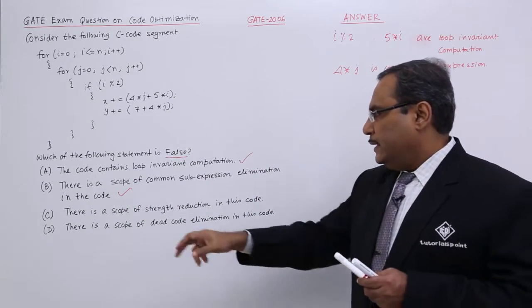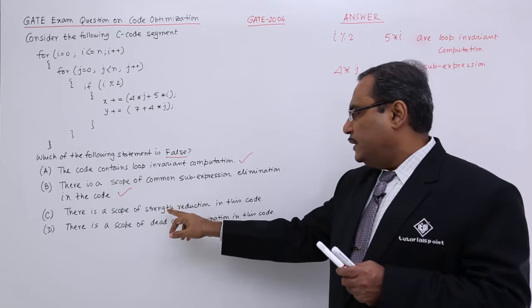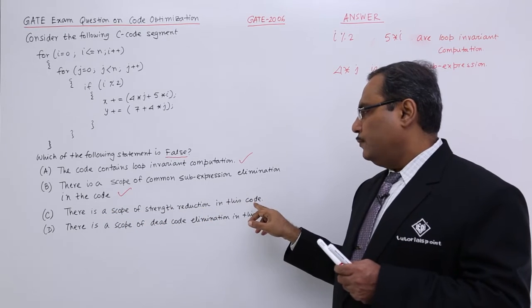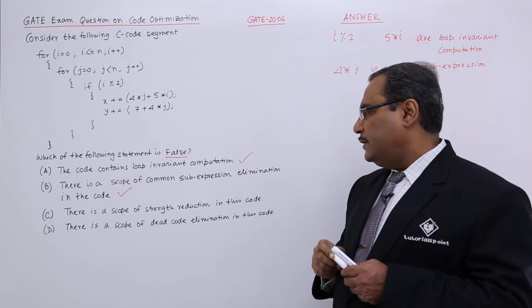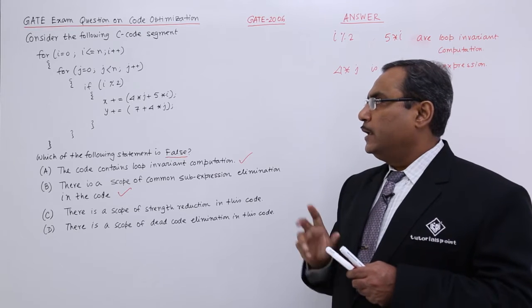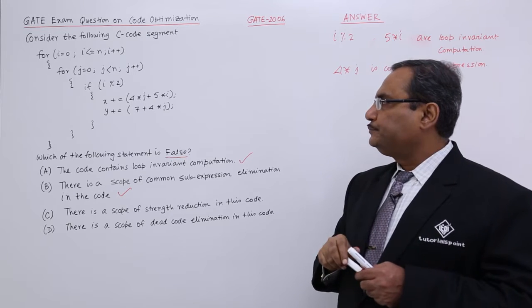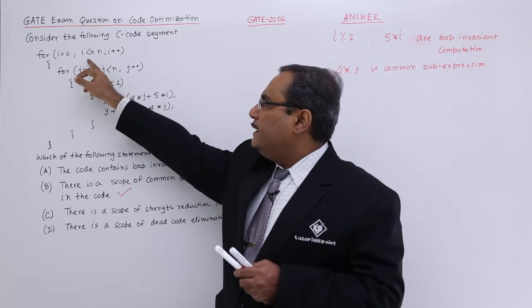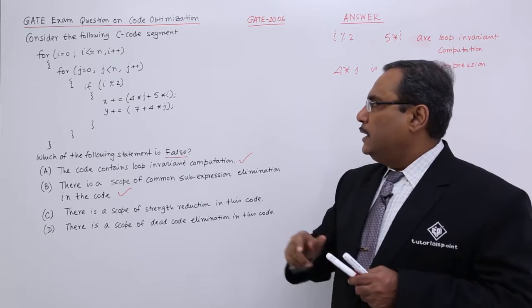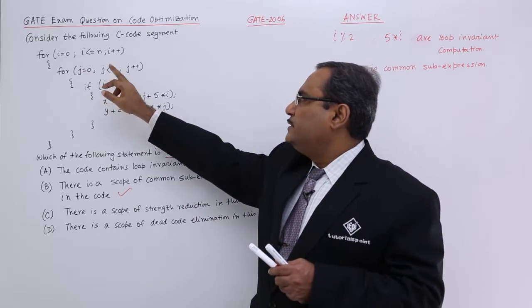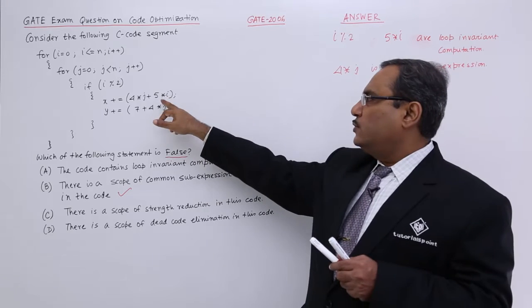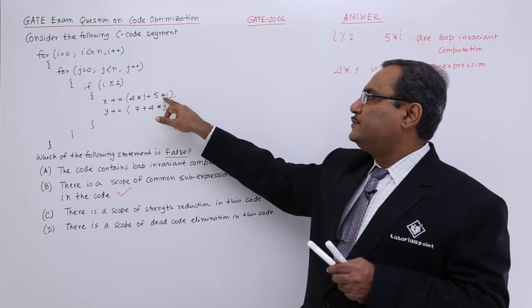Next one, there is a scope of strength reduction in this code. Now, see one thing here the value of i is getting increased by 1 and here the value of j is getting increased by 1. Just consider this particular one that is 5 star i.